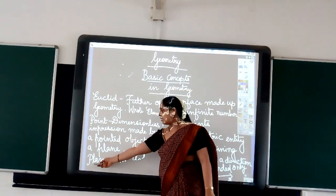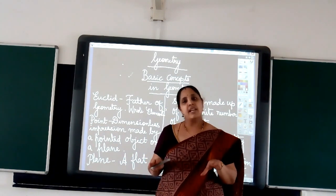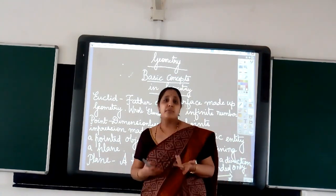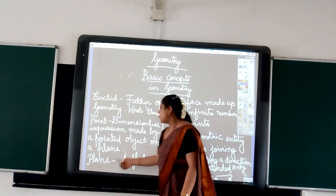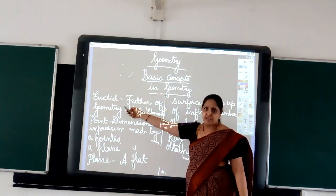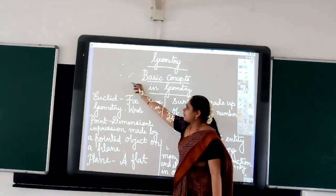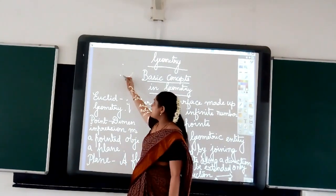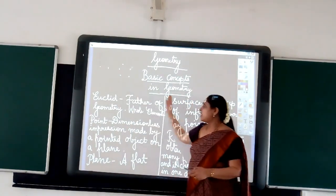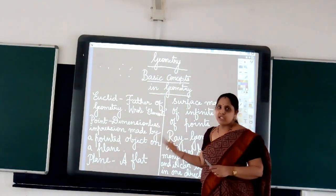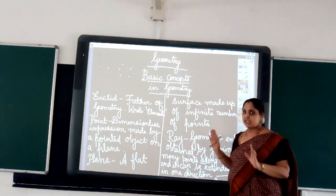Coming to the next entity, it is the plane. According to Euclid, any flat surface can be called as a plane. That is how we use the term plane surface. It is nothing but a flat surface which is made up of an infinite number of points. For example, I consider this board as a plane — you can see this board is made up of so many points. Infinite number of points can be found on this plane. So a plane is a flat surface which is made up of infinite number of points.